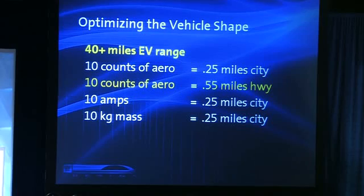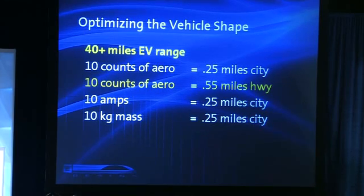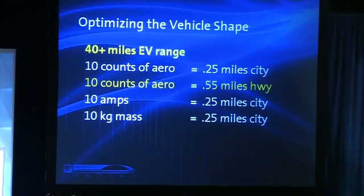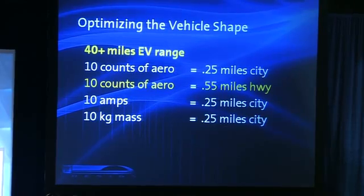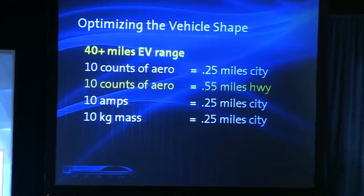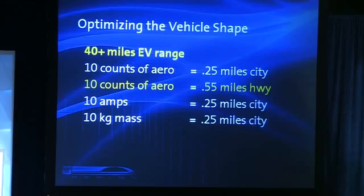The chart shows that ten counts of aerodynamic drag reduction is equivalent to extending the vehicle's range by over five-tenths of a mile. So just by tuning that mirror and tuning that spoiler, I was able to give you, the customer, an extra half a mile of driving range for free.